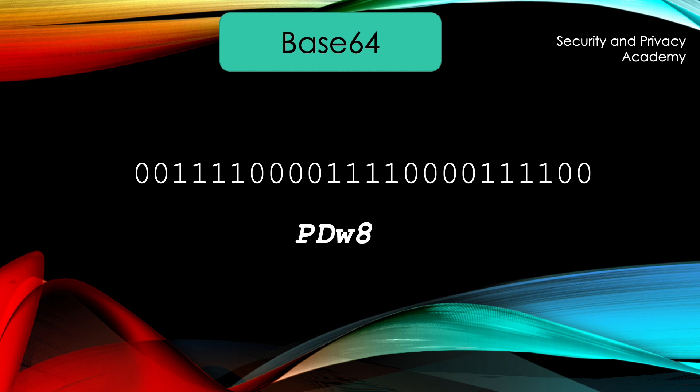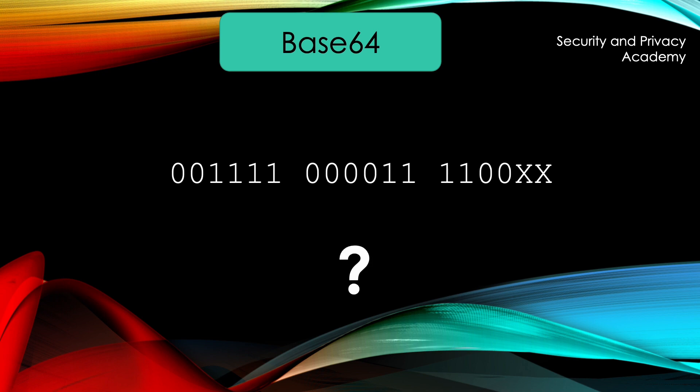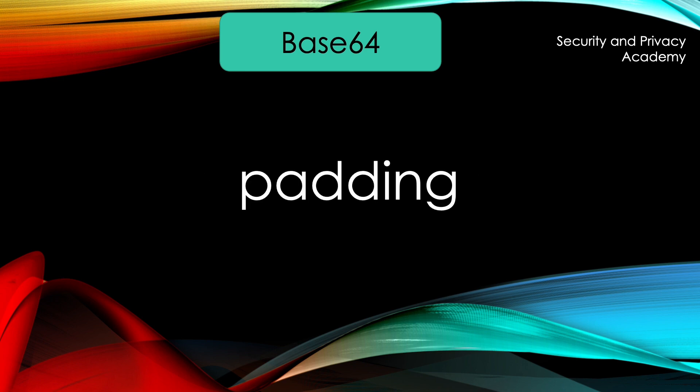Now, 3 times 8 is 24, which is neatly divisible by 6. Therefore, we didn't have any problems regarding the amount of bits. But what if we have only 2 bytes, such as in this example? Splitting them up into 6-bit intervals shows that there are 2 bits missing to have 3 full 6-bit words. Here, a method called padding comes into play.